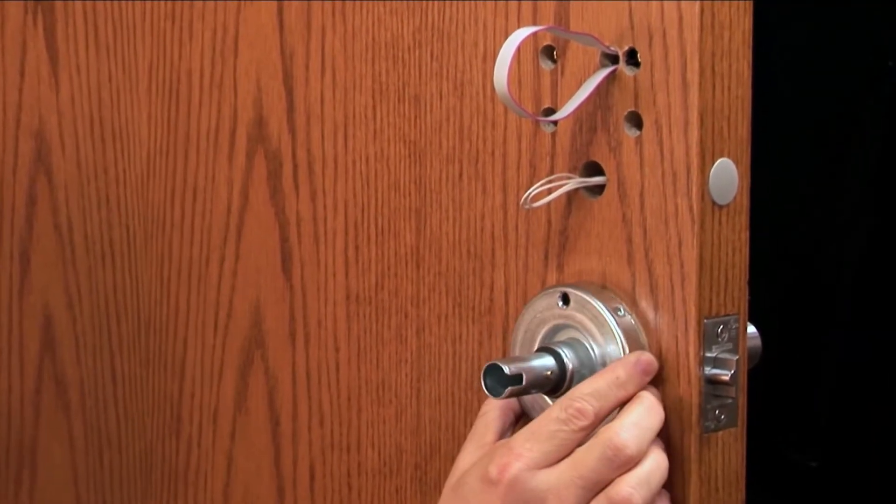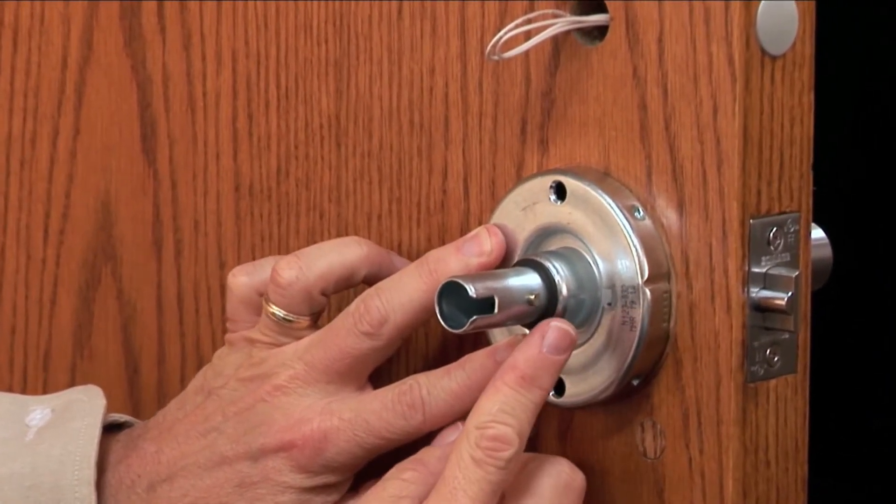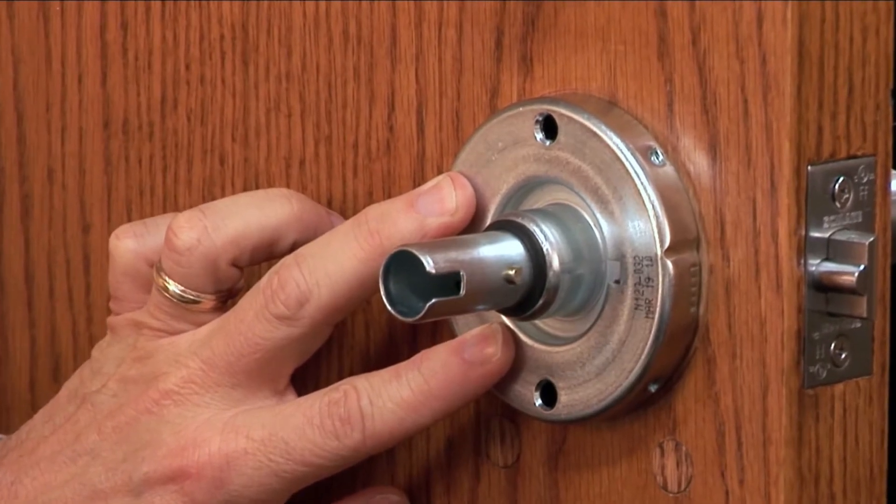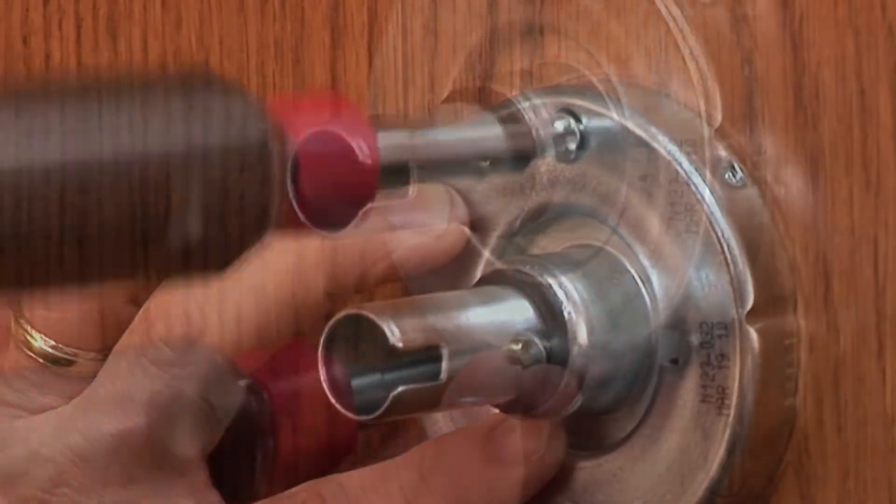Fit the spring cage over the anti-rotation plate. Make sure the knob stop pin points toward the latch. Secure the spring cage in place by inserting and tightening the two screws on the top and bottom.